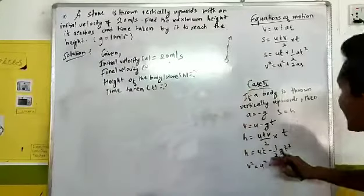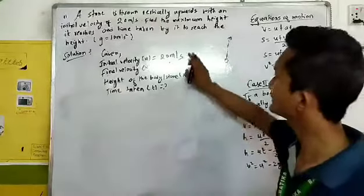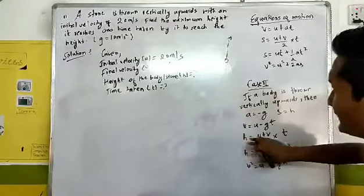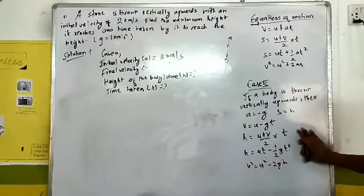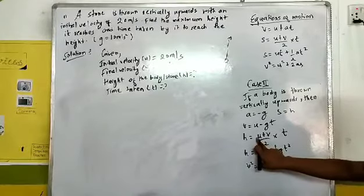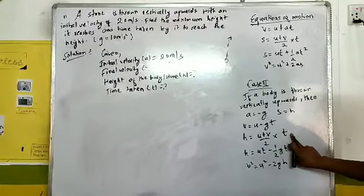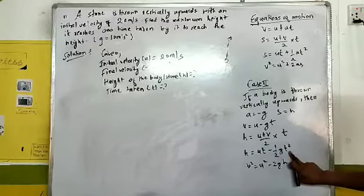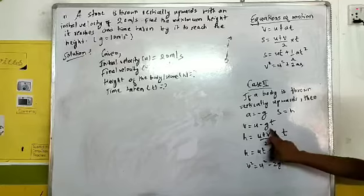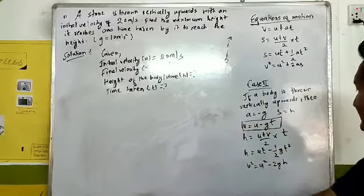First of all, let's find out which formula must be used to take out these two things. Height of the body is asked. Initial velocity is given, final velocity is given, but time is not given here. In this position the time is required. So first of all, you have to find out the time taken here. You can use this formula to take out the time.